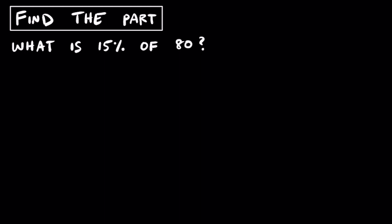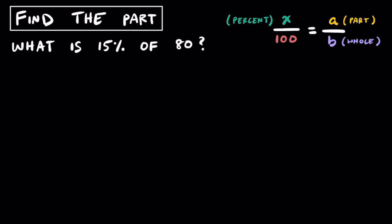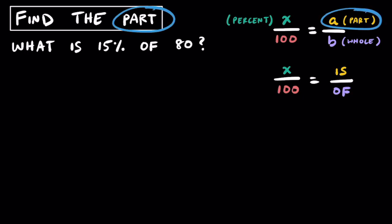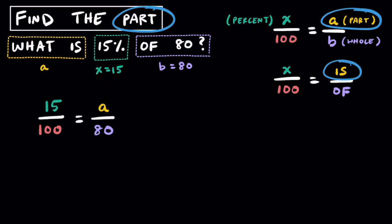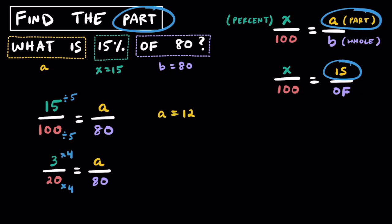Now let's try finding the part. The problem is: What is 15% of 80? Using 'is over of,' 'what is' is our unknown a, 'of 80' means b equals 80, and 15% means x equals 15. Our proportion is 15 over 100 equals a over 80. Simplifying the left ratio by dividing by 5 gives 3 over 20 equals a over 80. Since 20 goes into 80 exactly 4 times, a equals 3 times 4, which is 12. So 12 is 15% of 80.